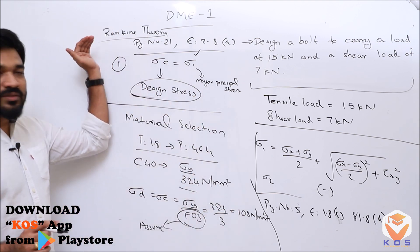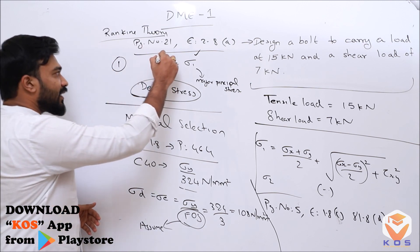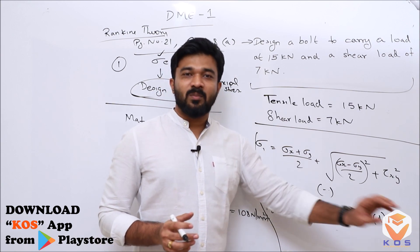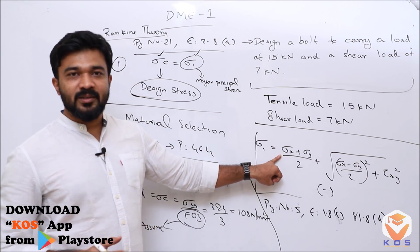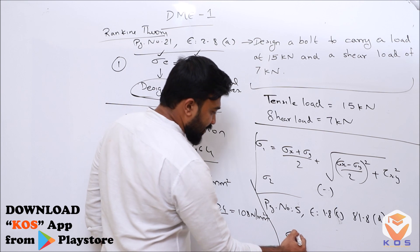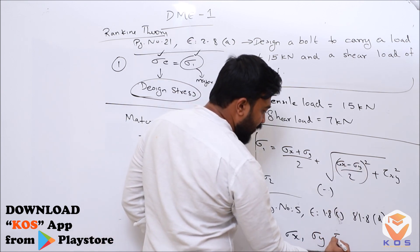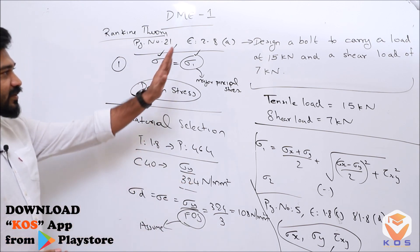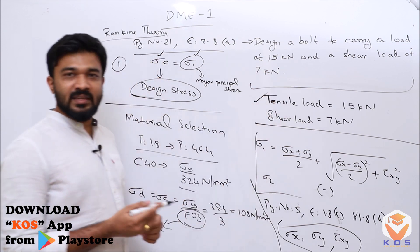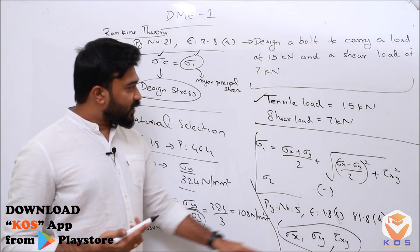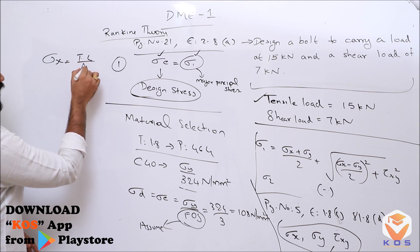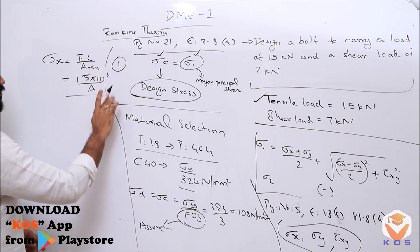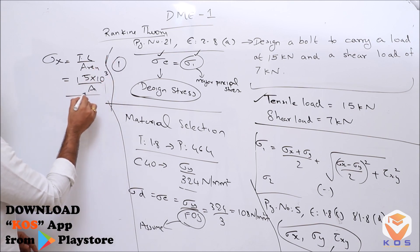Let's start the first theory of failure — Rankine Theory. We solve for sigma_e, then move to sigma_1 using page number 5, equations 1.8c and 1.8d. We need sigma_x, sigma_y, and tau_xy. Sigma_x is equal to the tensile load divided by area: 15 × 10³ divided by A.